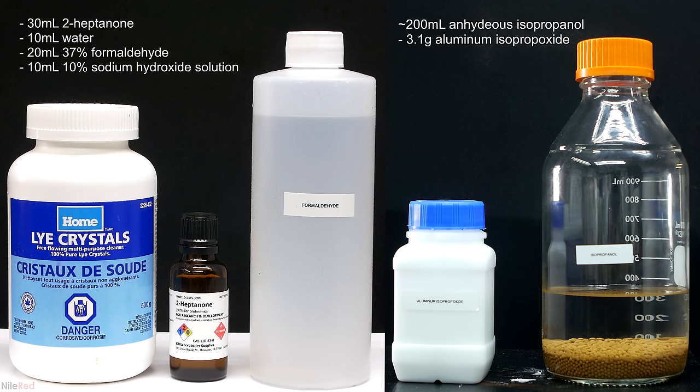For the MPV reduction, I made the aluminum isopropoxide in a previous video. The anhydrous isopropyl alcohol was prepared by adding some molecular sieves to some 99% isopropyl alcohol that I purchased from a local company.